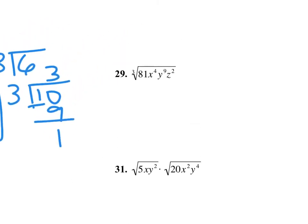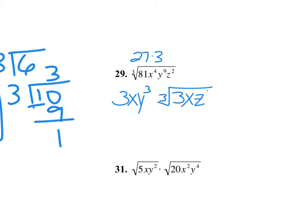Now doing cube roots: 81 is 27 times 3, and 27 is a perfect cube. Take the cube root of 27 and leave the 3 behind. For the variables: 3 goes into 4 one time with 1 remainder for x to the 4th, 3 goes into 9 exactly 3 times, and 3 won't go into 2 so z squared stays left behind.